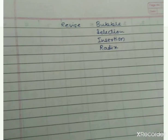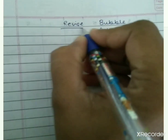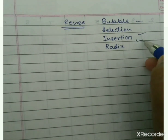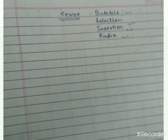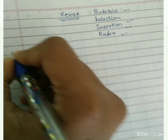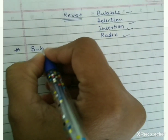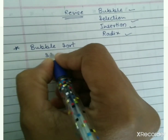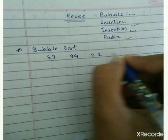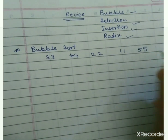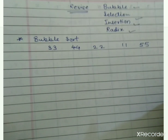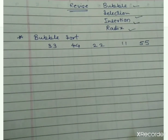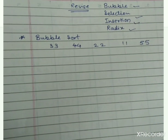In today's lecture we will revise different sorting techniques which we have learned in the last lectures: bubble sort, selection sort, insertion sort, and lastly radix sort. We will first see how to solve an example of bubble sort. Sorting means arranging your data in some proper order, either ascending or descending. We have to sort these elements in ascending order.